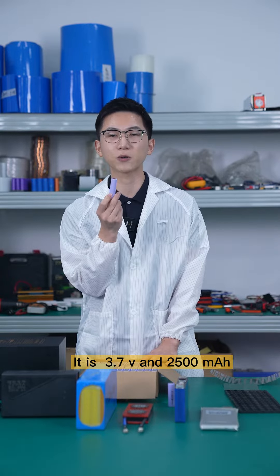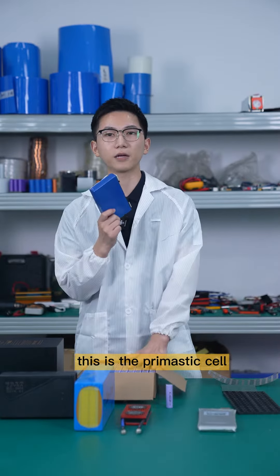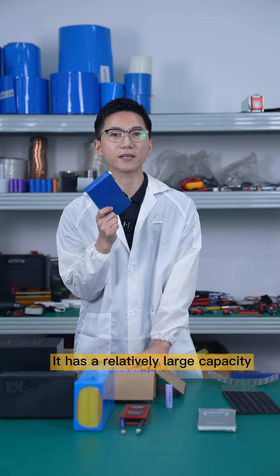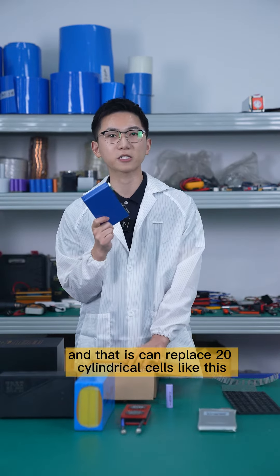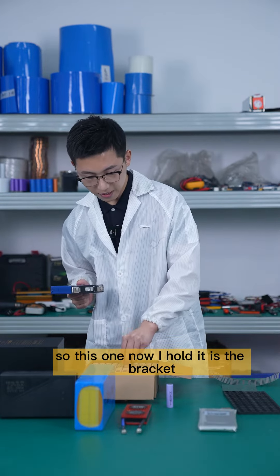This is the prismatic cell. It's a Li-ion battery with 3.7V and 50Ah power, a relatively large capacity. This one can replace 20 cylindrical cells like this.